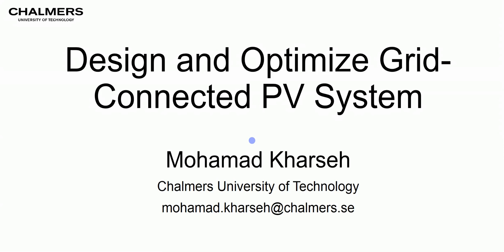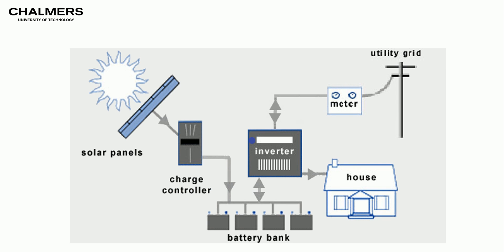Hello, this is Mohamed from Chalmers University of Technology. Today I will show you how to design and optimize a grid-connected PV system. The considered system looks as shown in this picture. The house is connected to the electricity grid and the PV system is installed. When there is no sun, the house is powered by the electricity grid. When there is solar generation, that electricity can be used to power the house.